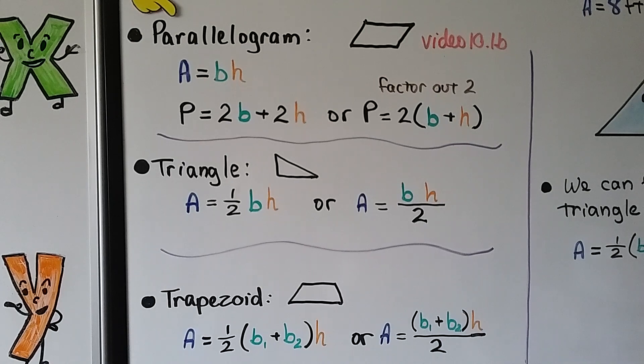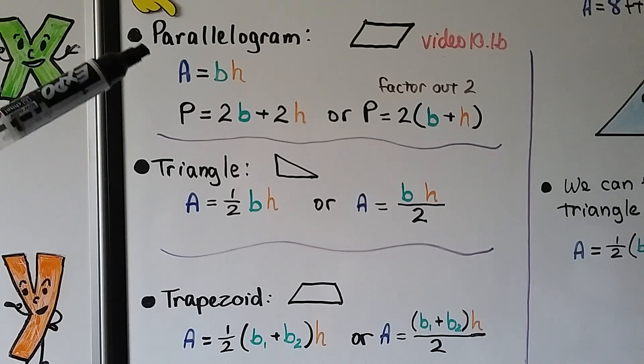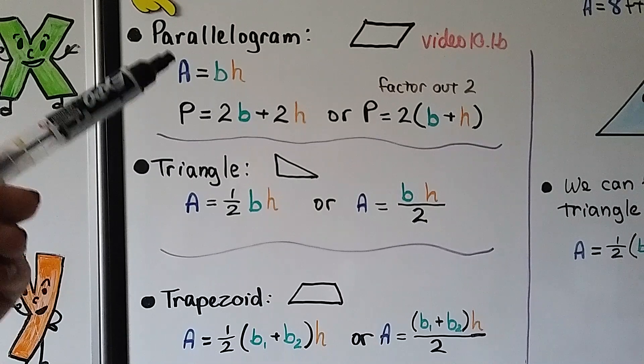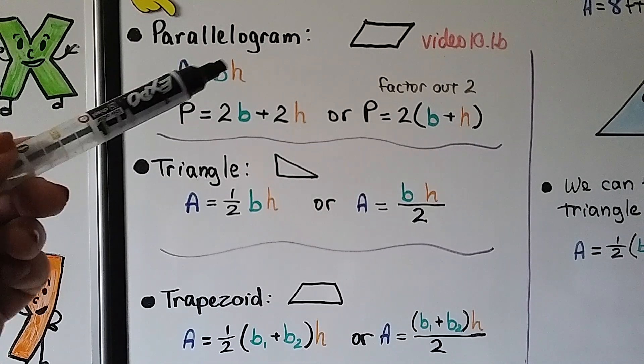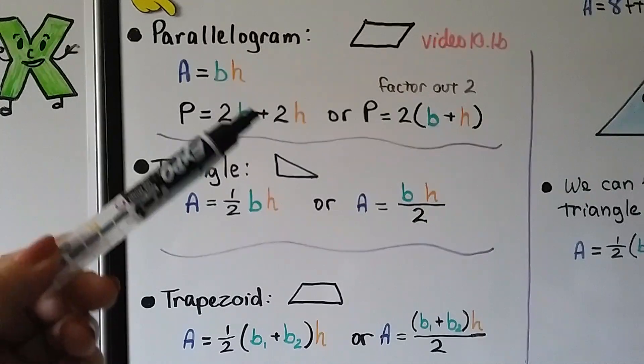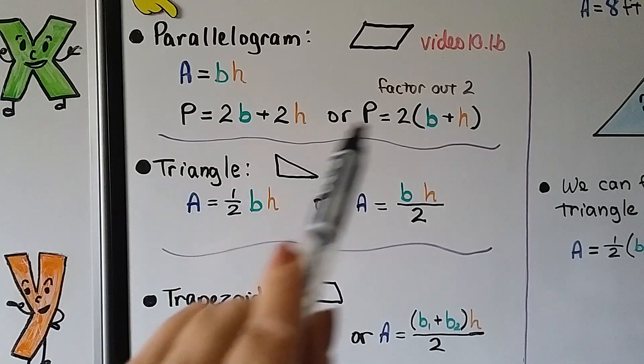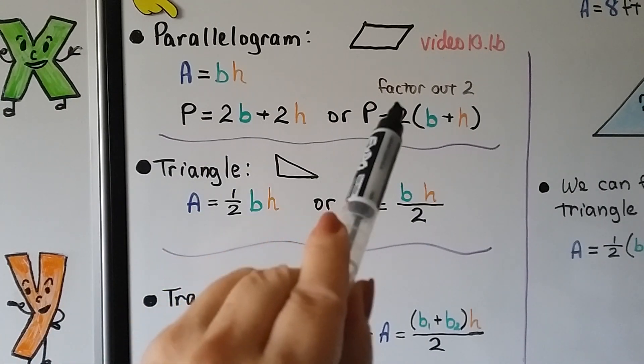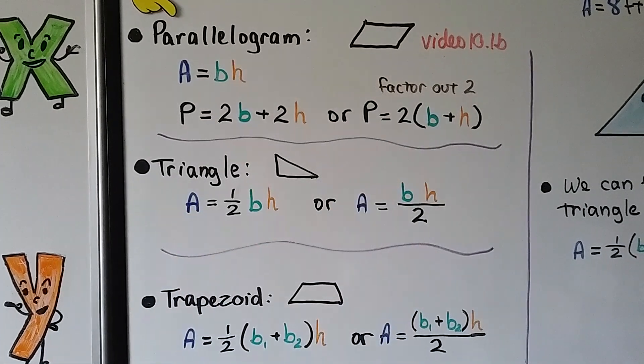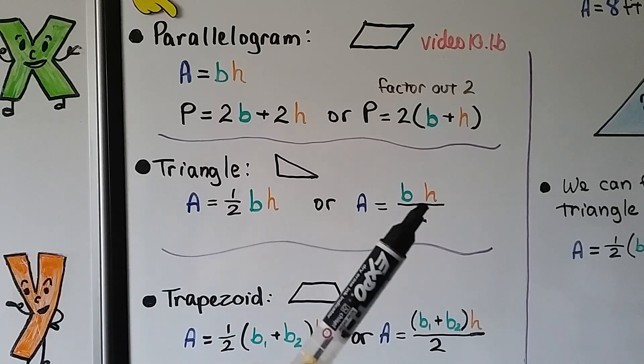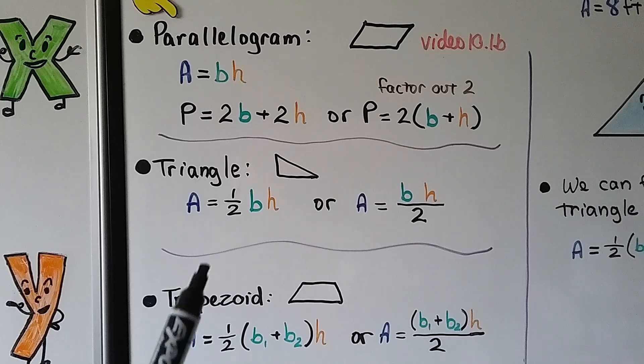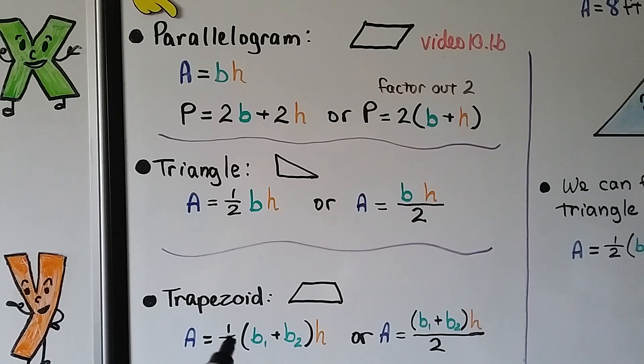So in our last video, we learned about the area and perimeter of a parallelogram that was 10.1b. We learned that the area would be base times height. The perimeter would be 2 base plus 2 height. We could also factor out this 2 and just say the perimeter is equal to 2 times the base plus height. So now we know about the area of a triangle. We can use this formula or this formula. We'll get the same answer. And the area of a trapezoid, we can use this formula or this formula. Same thing. Multiplying by a half or dividing by 2 is the same thing.